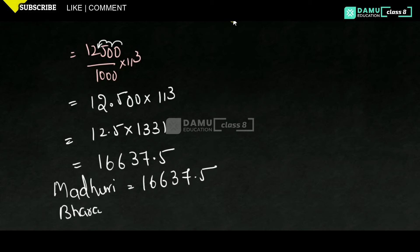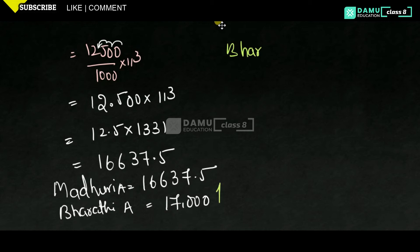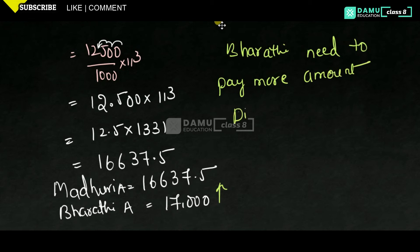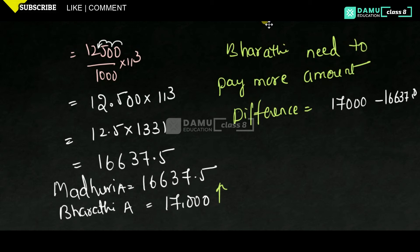Bharati's amount is 17,000 and Madhuri's amount is 16,637.50. Bharati needs to pay more. The difference is 17,000 − 16,637.50 = 362.50 rupees extra that Bharati needs to pay.